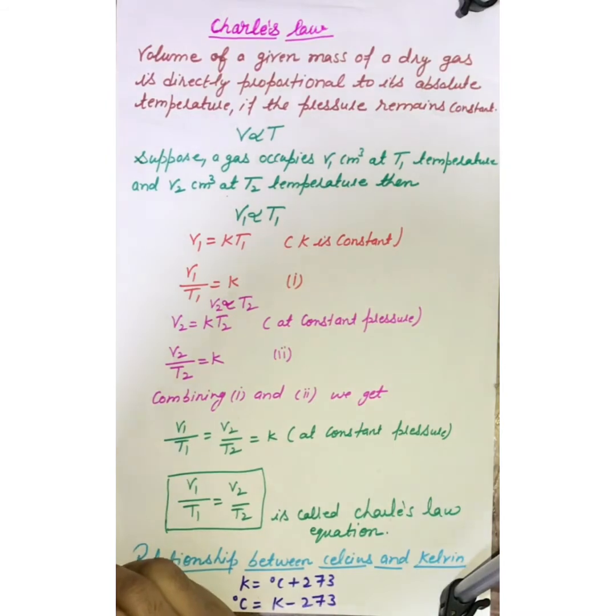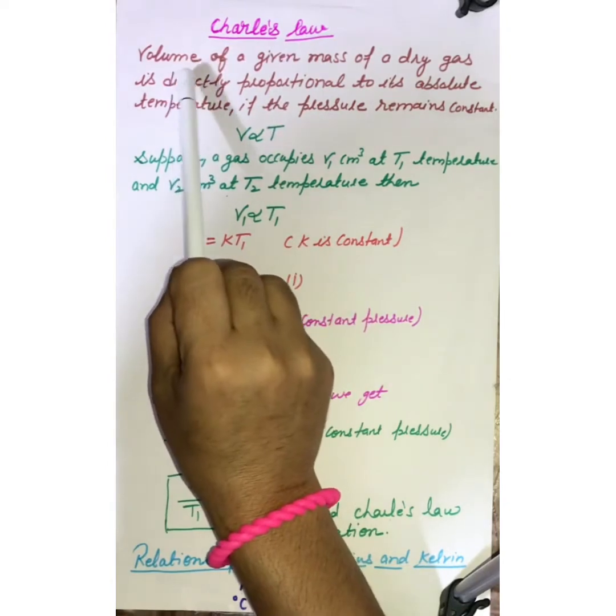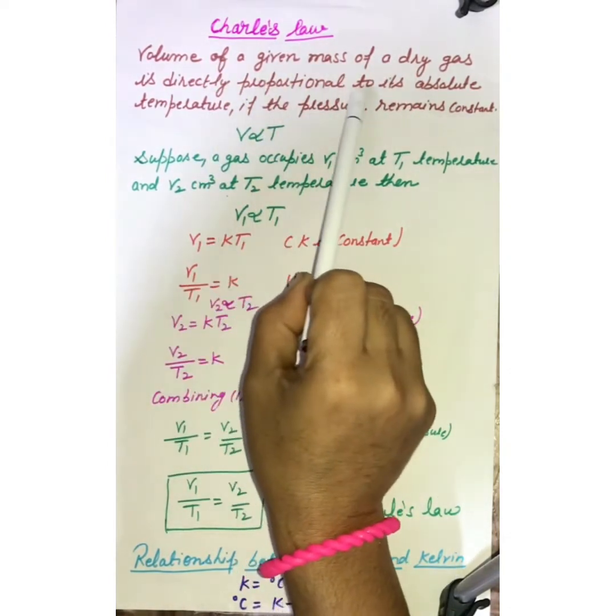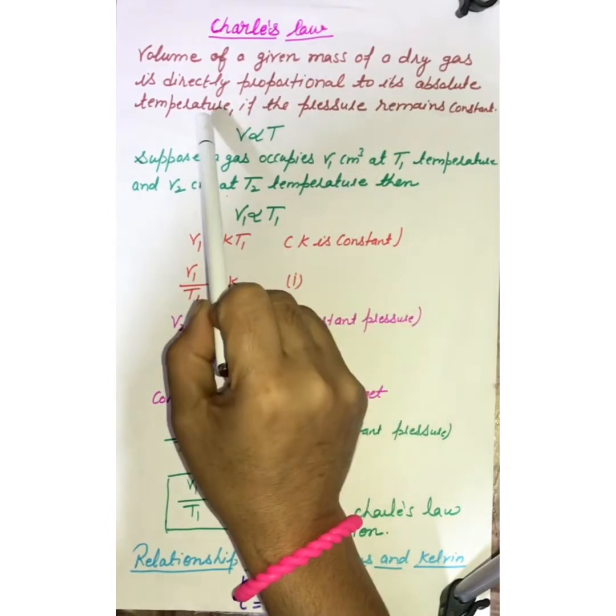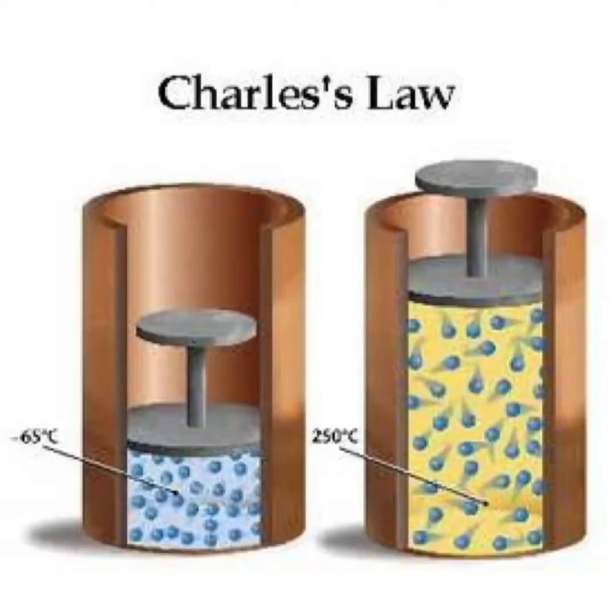Hello students, after the explanation of Boyle's law, today I will explain you Charles law. It is the volume of a given mass of a dry gas is directly proportional to its absolute temperature if the pressure remains constant. Here you can see the experiment which depicts the Charles law.